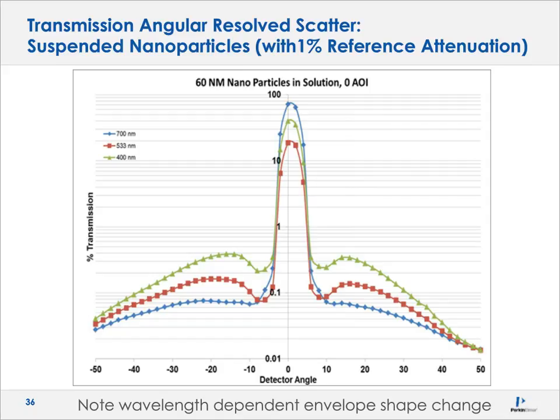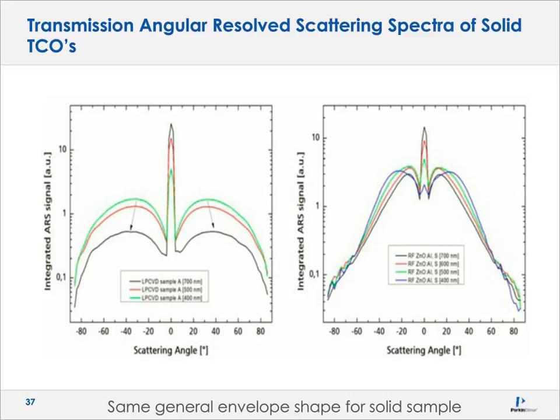Angular resolved scattering from solid samples — transparent conductive oxides used in solar cells — shows much more definition around the absorbance peak and out into the scatter. The shape of these profiles can be mathematically modeled with theoretical scattering based on size, shape, and interaction with the wavelength of light being used.